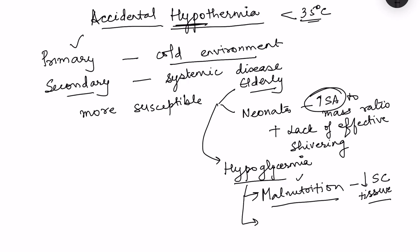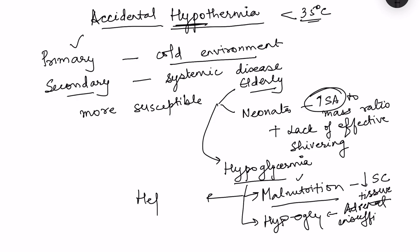Certain endocrine abnormalities can also lead to hypoglycemia and predispose to hypothermia — examples include adrenal insufficiency and hypopituitarism. Hepatic failure is another predisposing cause because it also decreases glycogen reserves. These are conditions which lead to hypoglycemia and hence predispose the individual to hypothermia.